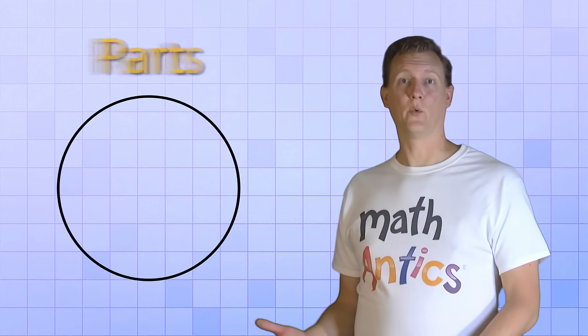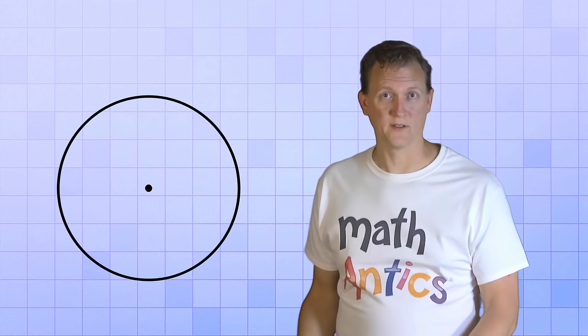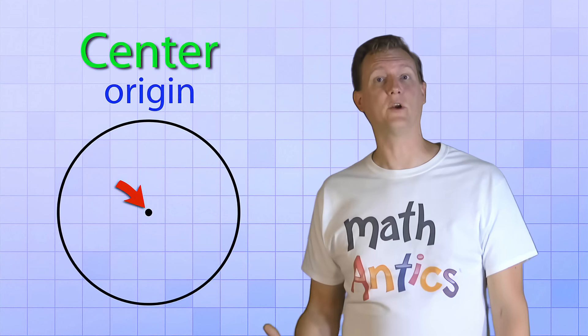Okay, now let's learn about the parts that make up a circle. First of all, we have the original point that we started with. That's called the center, or the origin, of the circle.